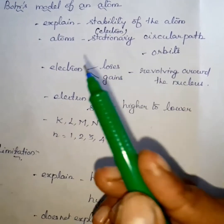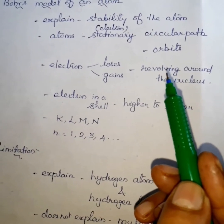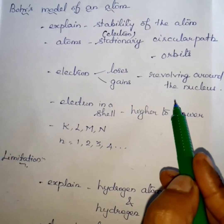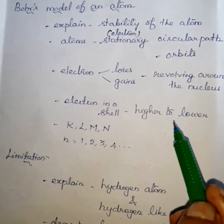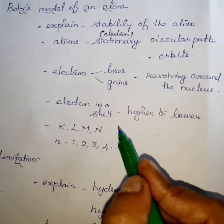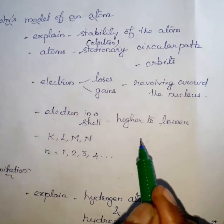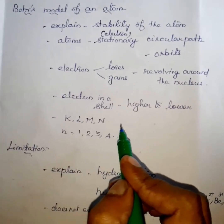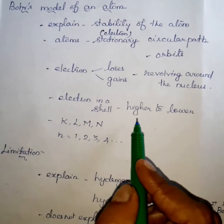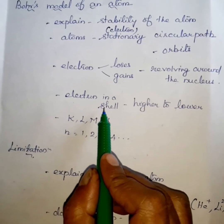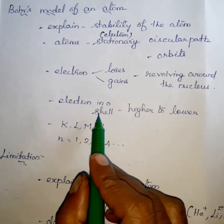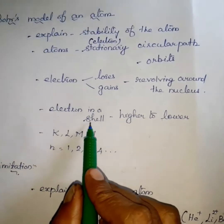Second postulate: while revolving around the nucleus, the electrons neither lose nor gain energy. There is no energy change in the fixed path. Third postulate: the electrons in a shell can move to a higher or lower energy shell by absorbing or releasing a fixed amount of energy. Moving from a lower energy shell to a higher energy shell requires absorbing energy. Moving to a lower energy shell means the electron loses energy.